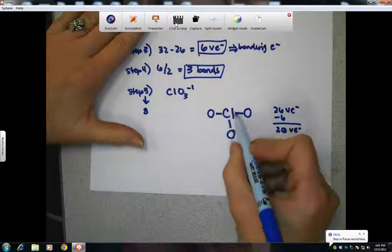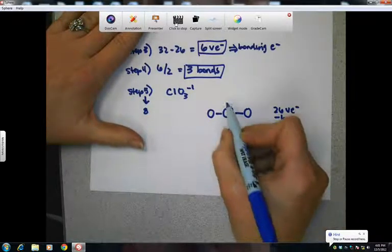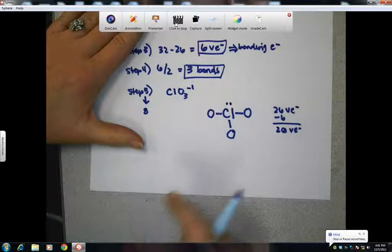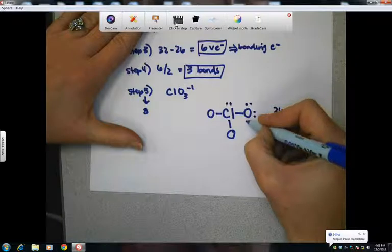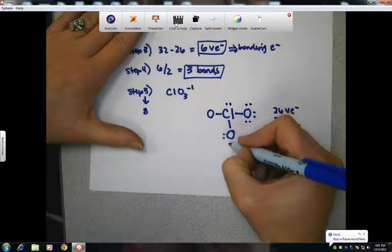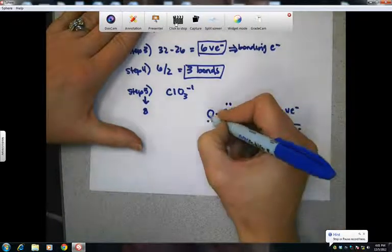So we're going to go ahead and add them in pairs around our atoms so that each one ends up with eight. So our chlorine already has six, so we'll add two to chlorine. And then we're going to add two to this oxygen, two more here, here, here, here, here, here, here, here, and here.